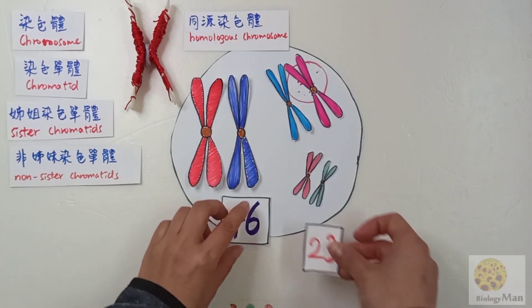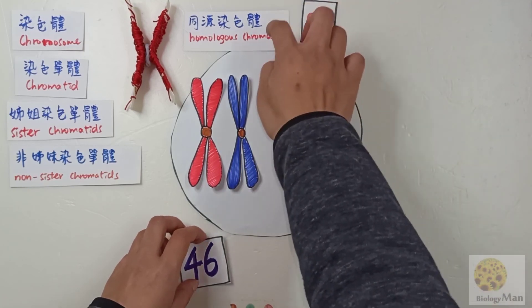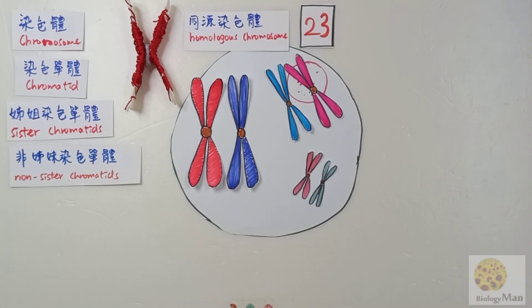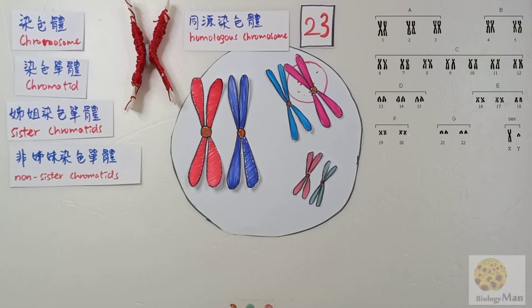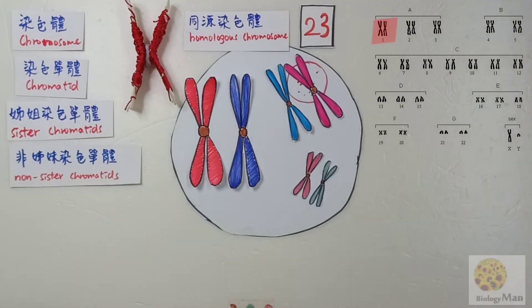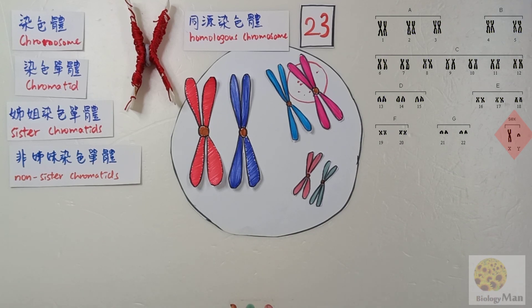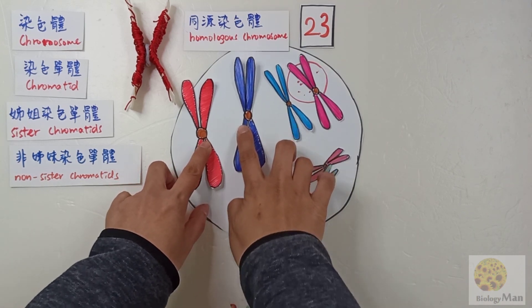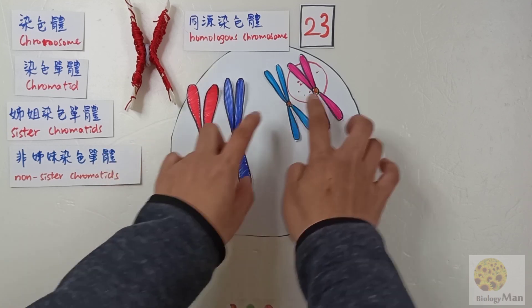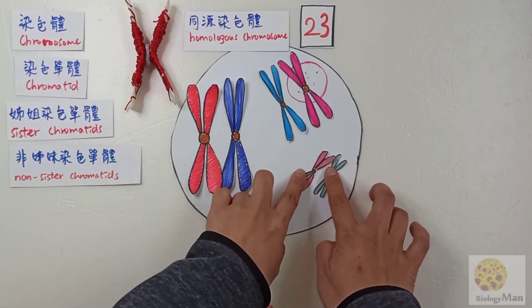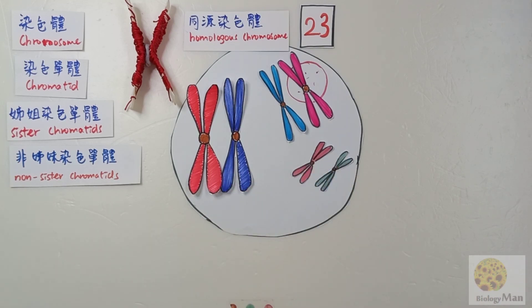In this fertilized egg there are three pairs of homologous chromosomes shown, but in the real situation there should be 23 pairs of homologous chromosomes. How can we identify homologous chromosomes inside a cell? Their size and shape are exactly the same — except for the sex chromosomes, the X and Y chromosomes. The Y chromosome is much shorter than the X chromosome, so the pair of sex chromosomes does not have the same size and shape. Remember: in a pair of homologous chromosomes, one is from the father and one is from the mother.